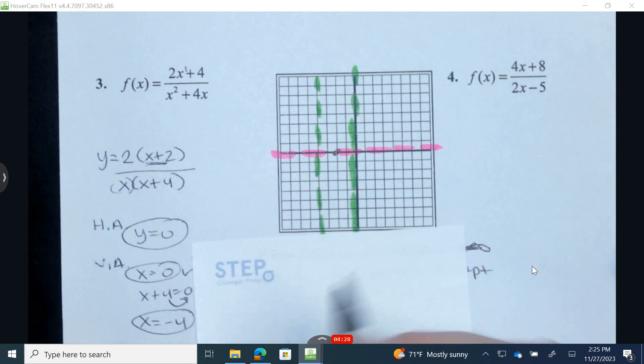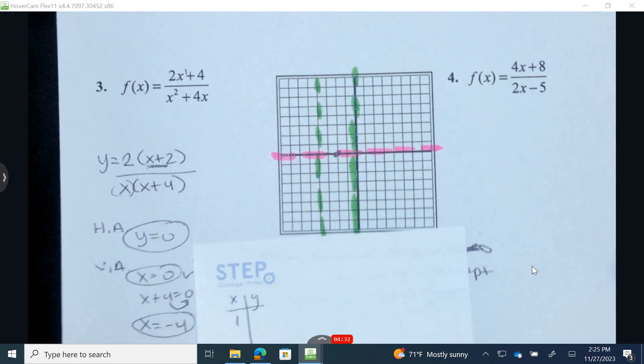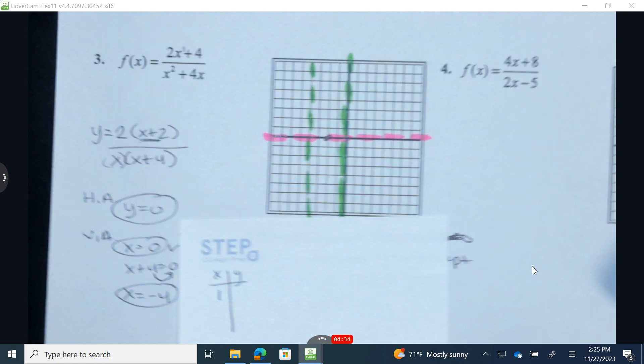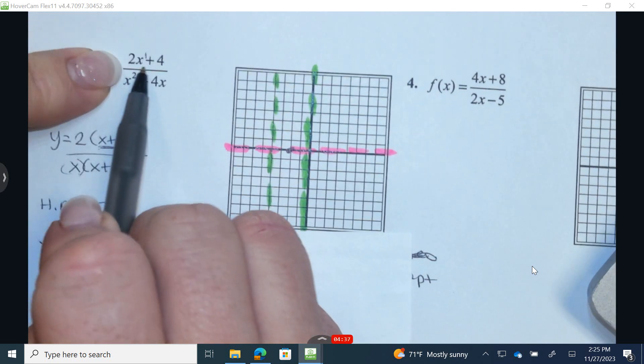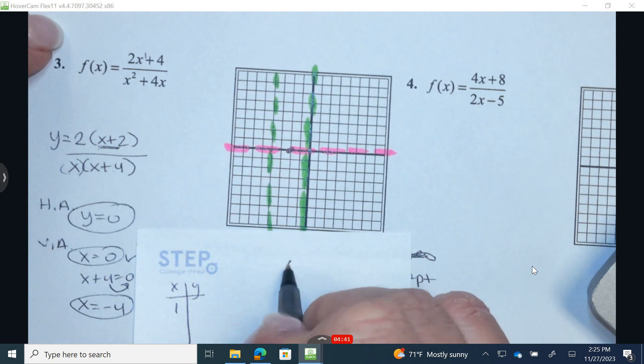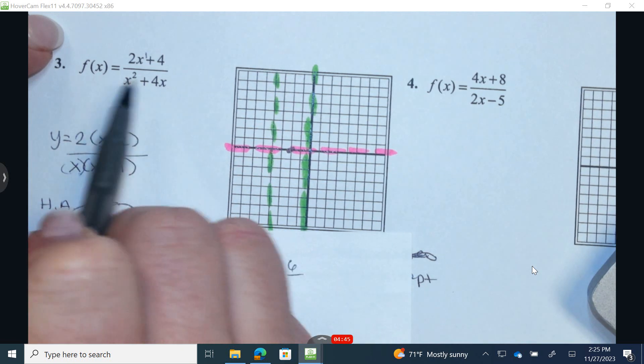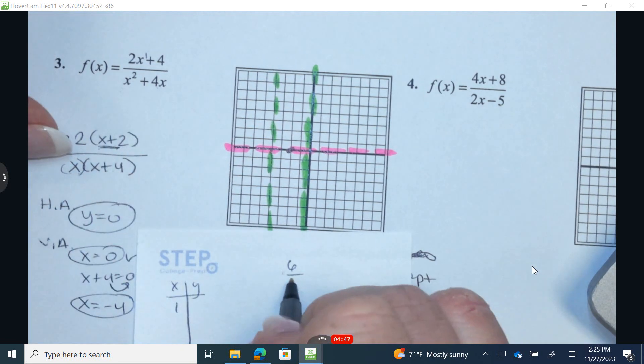So I'm going to choose a number to the right. So I'm going to choose a 1. So when my input is 1, let's figure out what the output is. 2 times 1 is 2. 2 plus 4 is 6. 1 squared is 1. 4 times 1 is 4. And 1 plus 4 is 5.